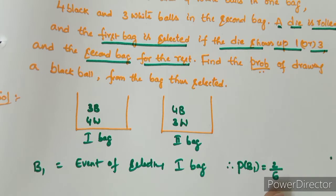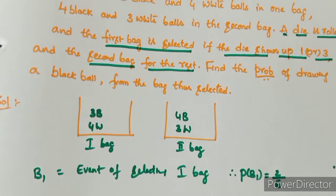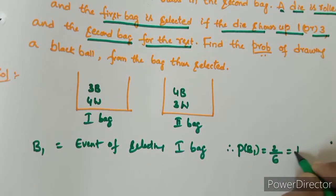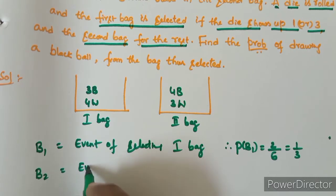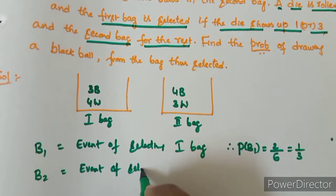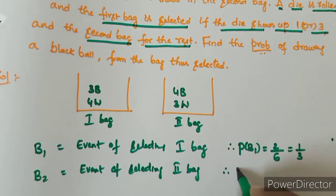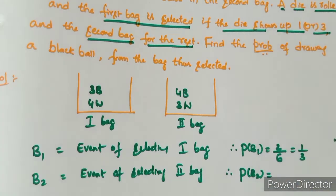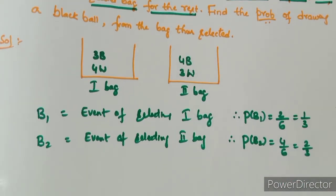The die has 6 possible outcomes. Selecting the first bag gives 2 by 6, which equals 1 by 3. B2 is the event of selecting the second bag. Probability of selecting the second bag: 4 favorable outcomes, so 4 by 6 equals 2 by 3. These are the probabilities for selecting the two bags.